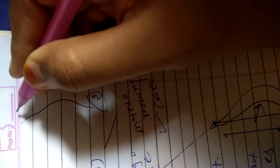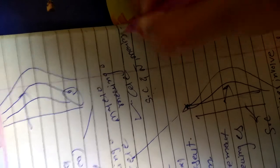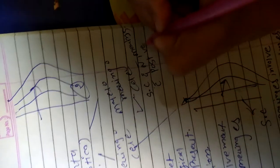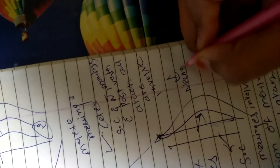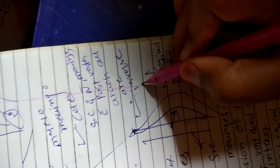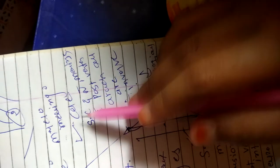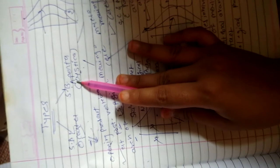Now we talk about the second subtype, myelomeningocele. In this, the spinal cord is also affected — meninges and posterior vertebral arch are all three involved. So neurological problems are definitely present. It is a very dangerous condition and the patient has more symptoms.